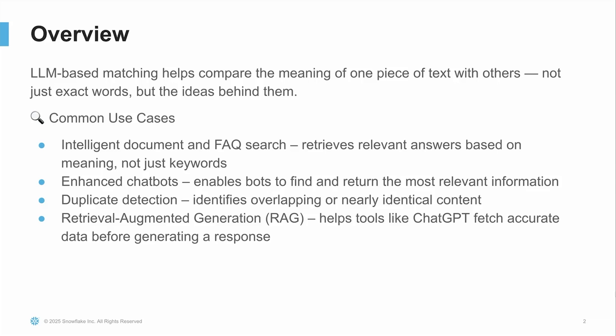There are a few common ways this is used. First, intelligent document FAQ search — users can ask questions in their own words and the system finds the most relevant answers, even if the phrasing is totally different. Next, enhanced chatbots: with LLM-based matching, bots can pull the right information based on what someone means, not just what they type. It also helps with duplicate detection, finding content that overlaps or says the same thing in different ways. And finally, it plays a key role in retrieval augmented generation, or RAG — that's when tools like ChatGPT search for accurate data before responding, so the answers are grounded in real information. In short, LLM-based matching lets machines understand language more like we do.